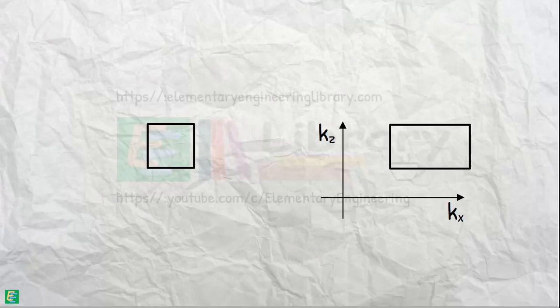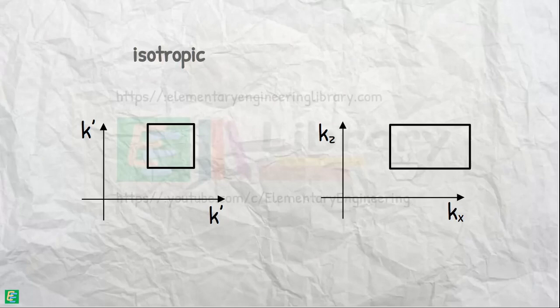the coefficient of permeability in the horizontal direction is kx and in the vertical direction is kz. While in the transformed square section, the coefficient of permeability is k' in both x and z directions because now the soil is isotropic.